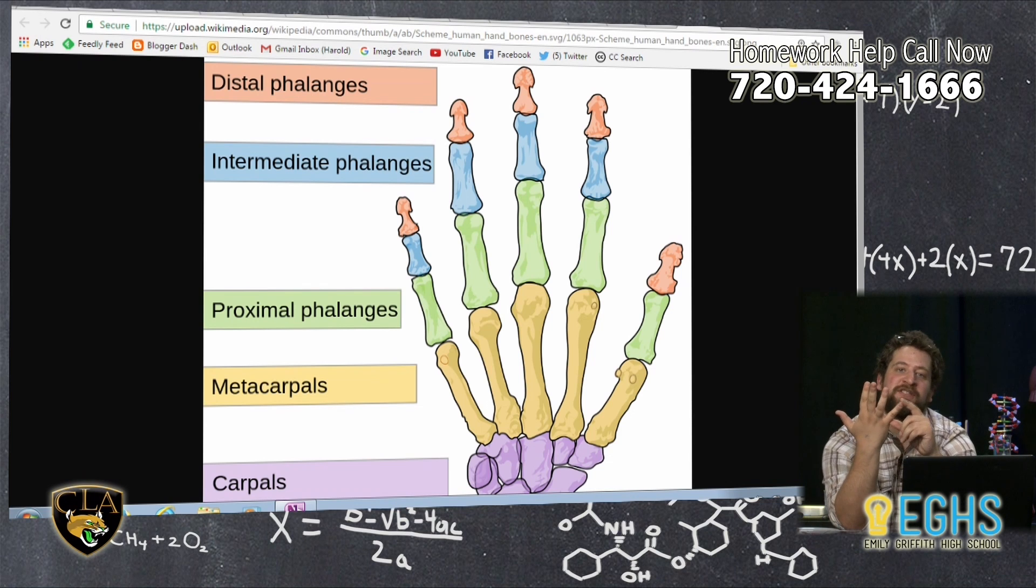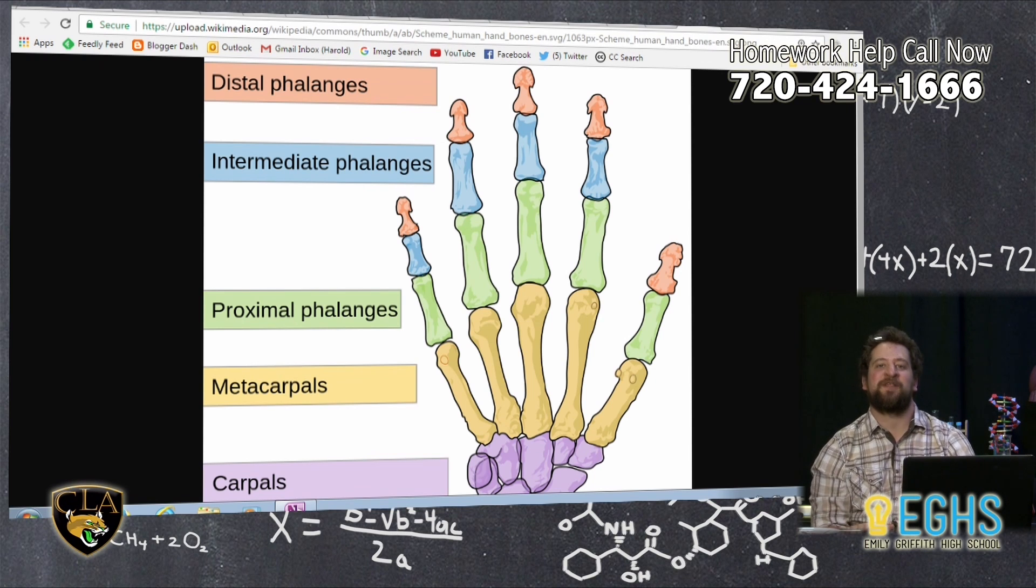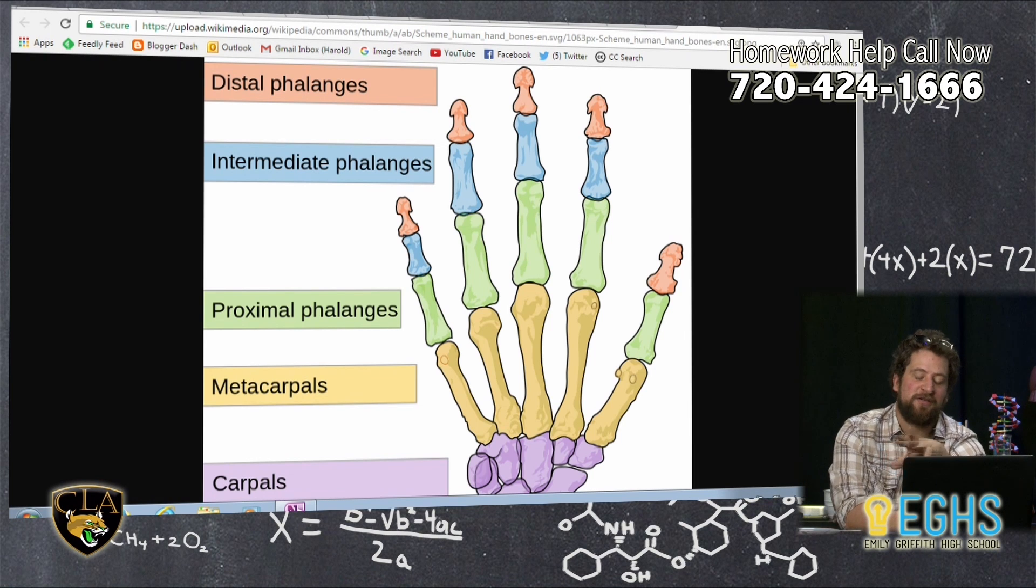And then the phalanges are the finger bones. You've got your proximal phalanges, which are the bones that are closest to your hand, the intermediate phalanges which are in the middle, and the distal phalanges which are the most distant. But that doesn't really matter too much for this problem. We're really just thinking about the fact that the phalanges are the fingers, and then noticing where the carpals and the metacarpals are.